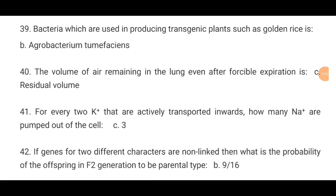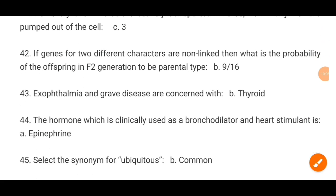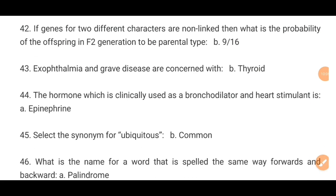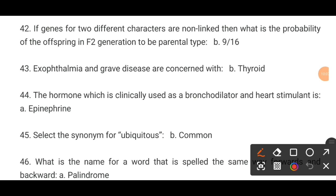MCQ number 42. If genes for two different characters are non-linked, then what is the probability of offspring in the F2 generation to be parental type? Option B is the correct answer: 9 by 16.